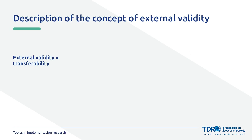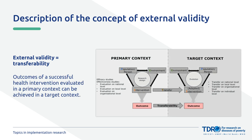Transferability: if an intervention worked well in one community, the primary context, you may want to know if it can work in a different community, your target context. To determine transferability, you apply a systematic approach by first collecting information on three key constructs: the population or person, the environment, and the intervention. You then determine how these interact to produce the outcome at a particular level — national, subnational, local, organizational, or individual — in the primary context. You look at the similarities and differences between the two contexts to decide if the intervention can be transferred successfully.